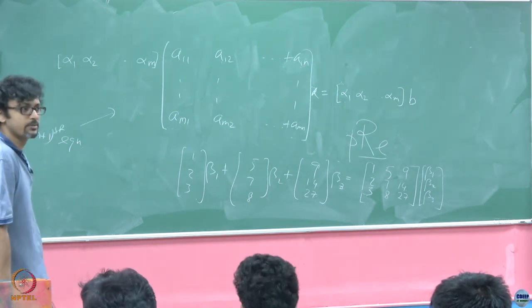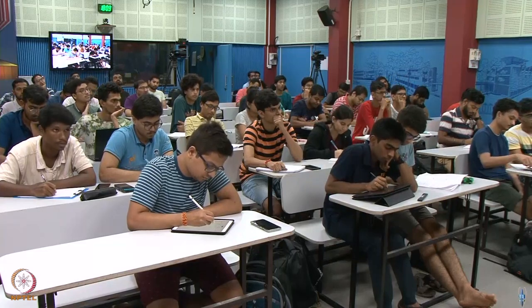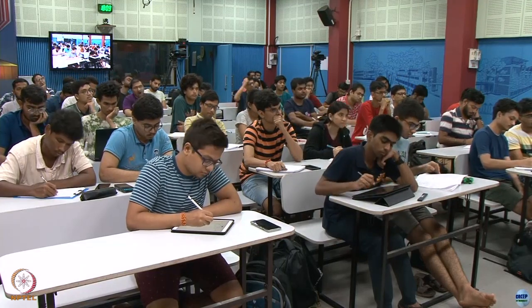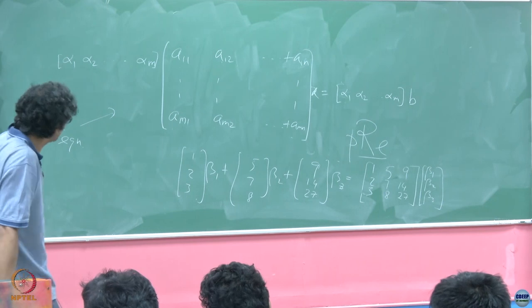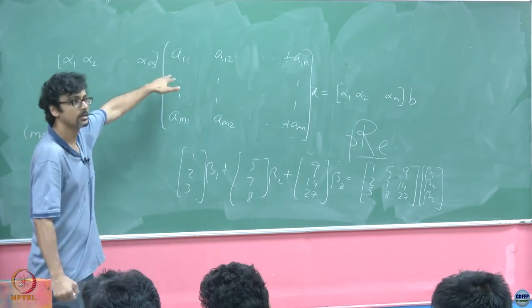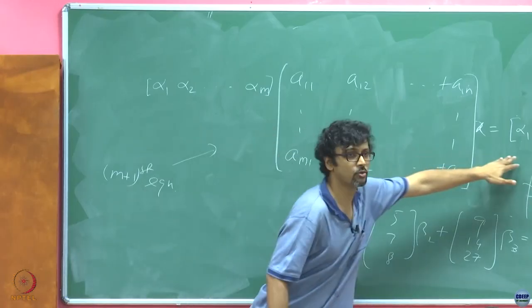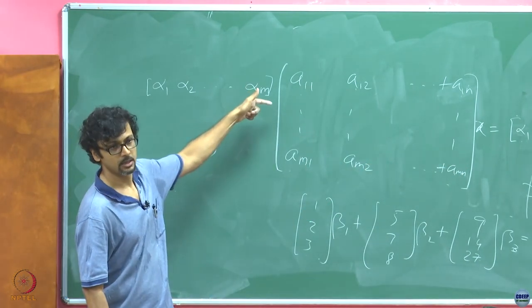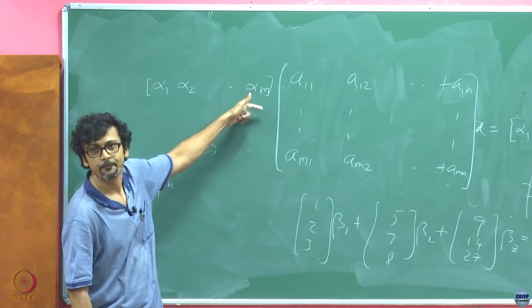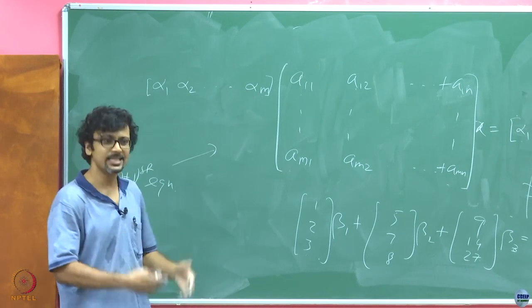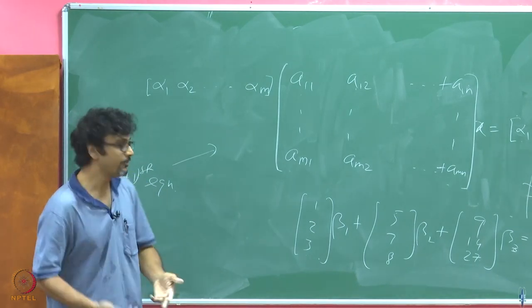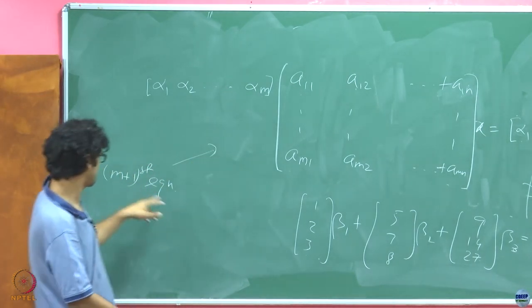That is the first observation that we make, that when we cook up the m plus first equation from the m equations, essentially what we are doing is we are hitting on both the sides of the equality with this sort of a row vector.